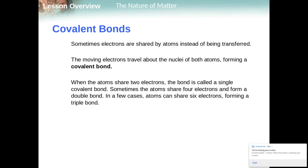Now covalent bonds, sometimes electrons are shared. The moving electrons travel about the nuclei of both atoms forming a covalent bond. When atoms share two electrons, the bond is called a single covalent bond. So single covalent bond, two shared electrons. Sometimes we share four electrons forming a double bond and six electrons forming a triple bond. These triple bonds, they are not very common at all. They're only found in a few substances. So we're not going to focus on those as much. We're going to focus more on the single and the double bonds.